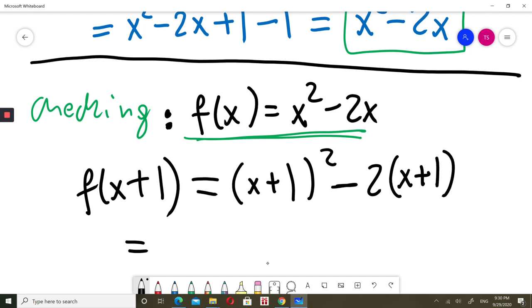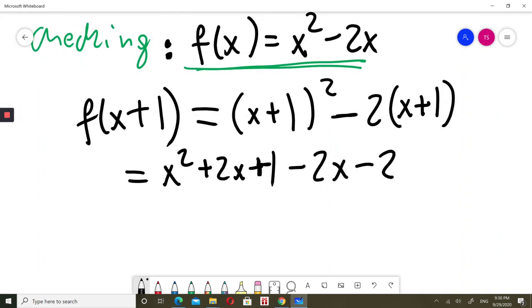So this is equal. I will do it quickly. x plus 1 squared is x squared plus 2x plus 1. If someone is confused, please write two brackets, x plus 1 times x plus 1 and solve it slowly. Then minus 2 times that bracket would be minus 2x minus 2. Now 2x minus 2x would be 0.